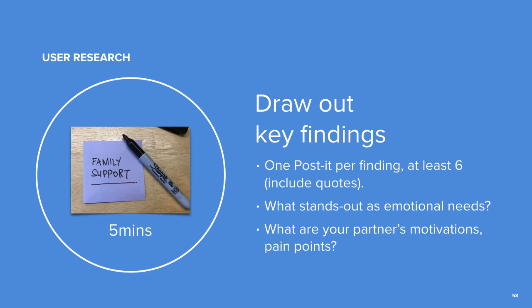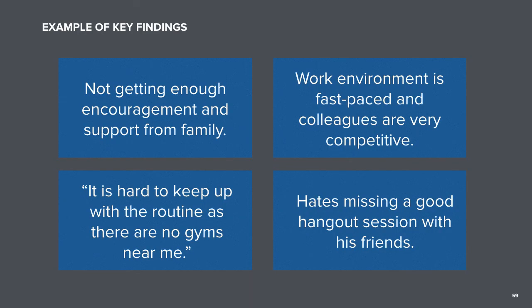Now that you've completed your interview, it's time to review what you've captured. Take a look at your notes and write down key findings on post-its — one post-it for each finding. Try to draw out at least six findings. Look for things like emotional needs, motivators and pain points. Here are some examples of findings. Quotes are great, so make sure you write those down as well. Try to write as much as you can on each post-it so anyone could pick it up and get an understanding about your findings. You have five minutes for this activity, after which the discovery stage of the workshop is complete. When you're ready, continue to the next video to start the definition stage.